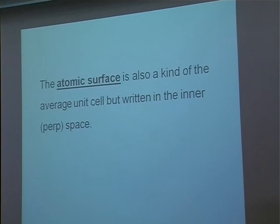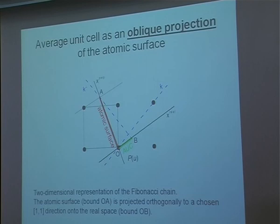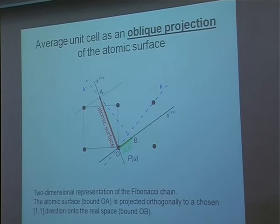The atomic surface is also a kind of average unit cell, but written in the inner space — the perpendicular space. Now we have the atomic surface in high dimension and we have the probability distribution of the average unit cell in physical space. One can easily prove that when we have an atomic surface and we choose the scattering vector k, if we project this atomic surface perpendicular to the k vector, the trace of this projection is an average unit cell.